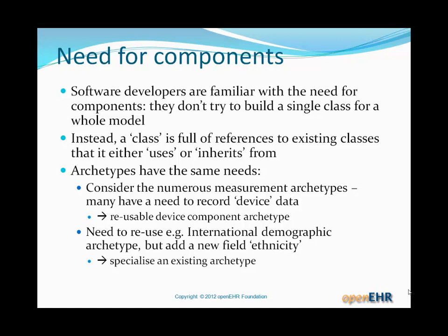It's immediately obvious that we should have a device archetype that can be used as a component to plug into other archetypes that want to talk about devices. We also need to be able to reuse in a different way. For example, an international demographic archetype — we might need to add a new field to do with ethnicity. So we're reusing the whole thing, but specializing it in some way. So we've got two types of reuse there.